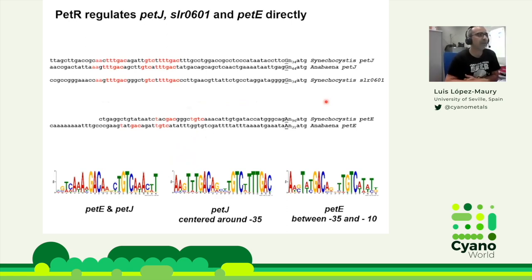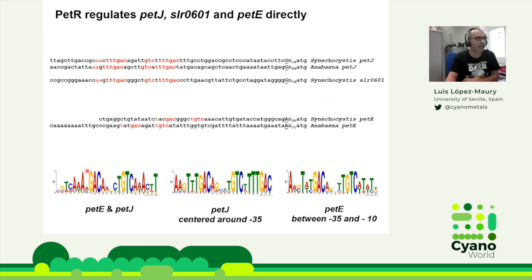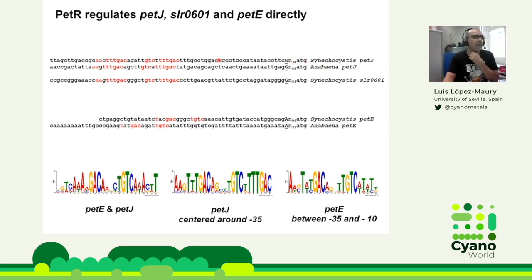To find binding motifs, we retrieved all PETJ and PETE promoters from genomes containing both genes and the regulatory system PETR and PETP — around 100 different promoters — and looked for conserved motifs. Using both sets of promoters we identified a core binding motif with the core sequence GAC-N5-GTC. In Synechocystis and Anabaena, the binding sequences in the PETJ promoter overlap the minus-35 box, consistent with an activator position, while in the PETE promoter they are between the minus-10 and minus-35, consistent with a repressor role — exactly matching what we observed in the mutant strains.